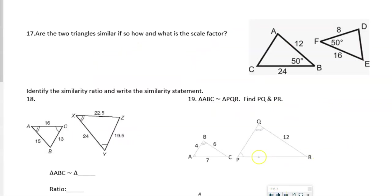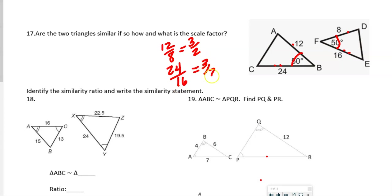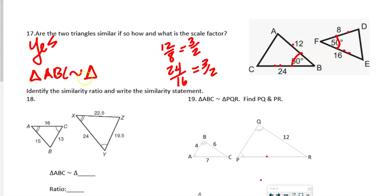Are the two triangles similar? Yes — we have congruent angles. Comparing short side to short side: 12 over 8 = 3/2. Comparing long side to long side: 24 over 16 = 3/2. Same ratio, so they are similar. Triangle ABC is similar to triangle DFE — I knew that because I started at the end of the one-tick side, away from that angle.